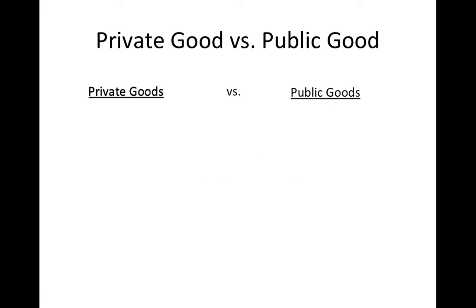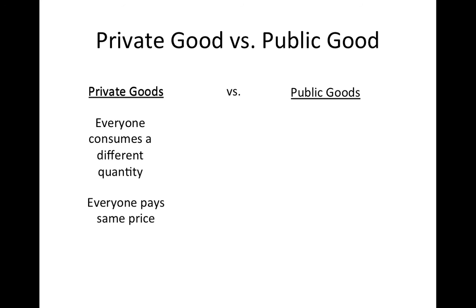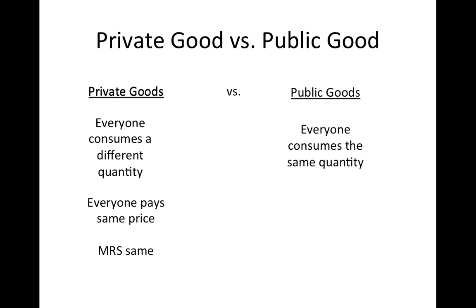These efficiency conditions illustrate the fundamental difference between public and private goods. With a private good, everyone consumes a different quantity but pays the same price, so each consumer's marginal rate of substitution equals the market price — meaning everyone has the same marginal rate of substitution. For a public good, the situation is reversed: because everyone consumes the same quantity, each person has a different marginal rate of substitution and would be willing to pay a different price. This concludes this lesson on public goods.